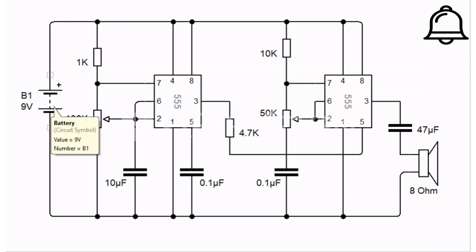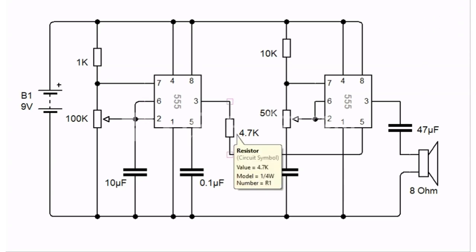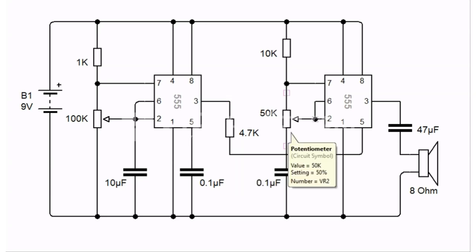Like most 555 timer circuits, IC pins 2 and 6 are connected. Pins 1 and 8 are connected to ground and VCC respectively for both the ICs.